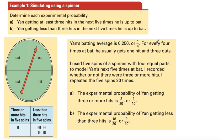Yan's batting average is 0.250, one for four. For every four times at bat, he usually gets one hit and three outs. I used five spins of the spinner with four equal parts to model Yan's next five times at bat. I recorded whether or not there were three or more hits. I repeated the five spins 20 times.